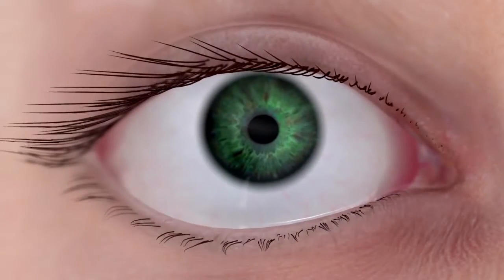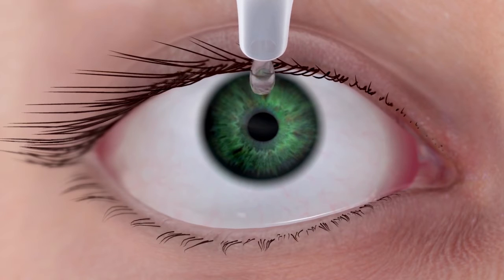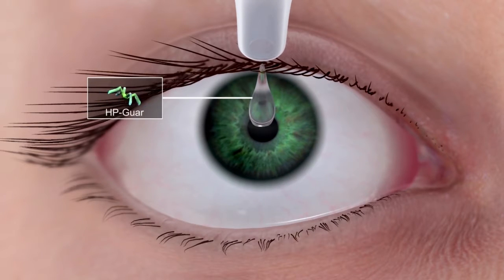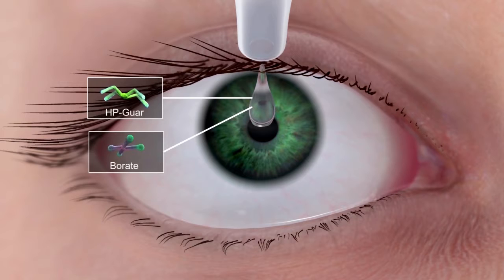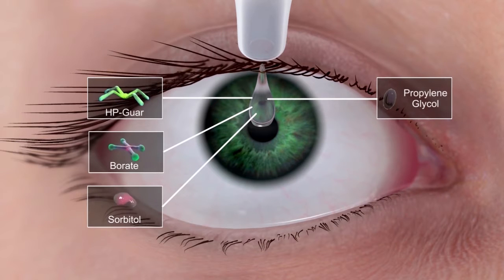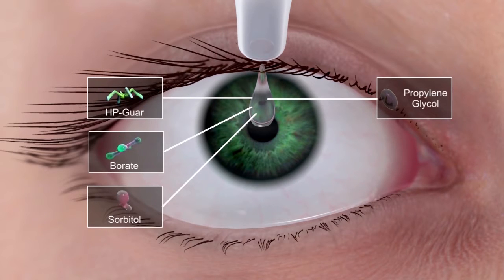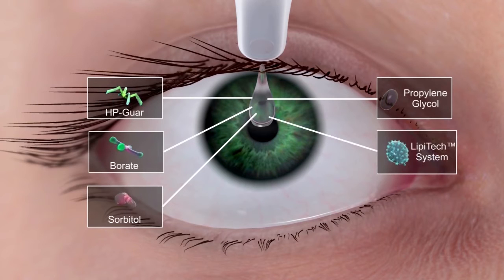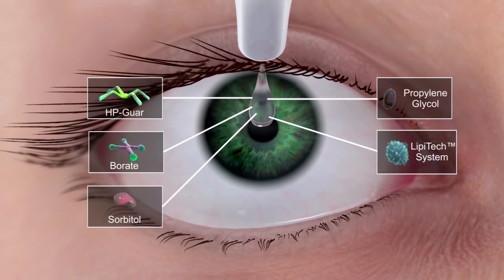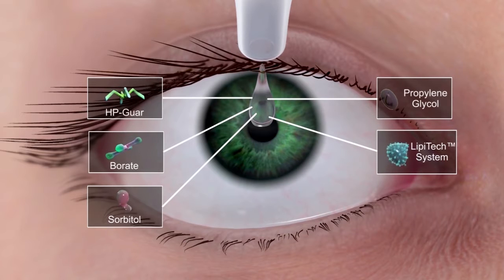Systane Balance Lubricant Eye Drops is a scientifically engineered product which contains HP-Guar, Borate, Sorbitol, and the demulcent Propylene Glycol. It contains Alcon's exclusive Lipitec system, a unique emulsion technology of mineral oil and a patented anionic phospholipid.